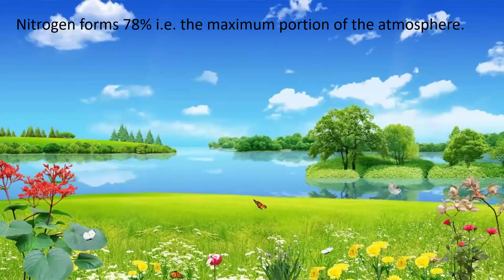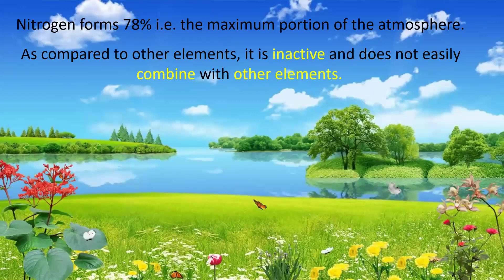Our body is not compatible with atmospheric nitrogen — we cannot just breathe it and use it. So we don't directly use the nitrogen of the atmosphere. But it is a very important element. Compared to other elements, it is inactive and does not easily combine with others. You know from the oxygen cycle that oxygen never remains alone — it combines with others to form water (H₂O) or carbon dioxide (CO₂). But nitrogen will not quickly combine with anyone else.